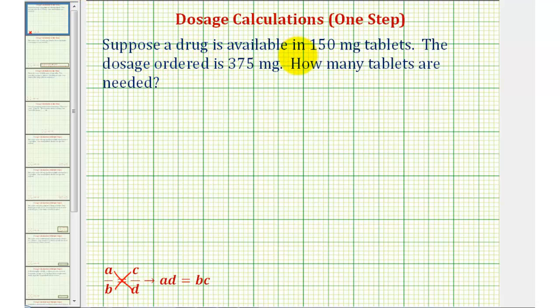So we know the drug is available in 150 milligram tablets, which we can write as a rate: 150 milligrams per one tablet.